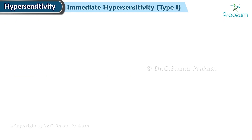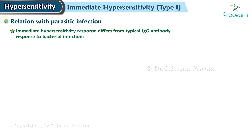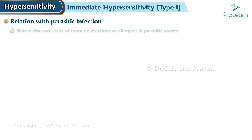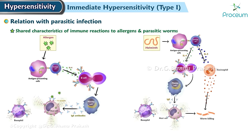The last thing we'll talk about with immediate hypersensitivity is its relationship with parasitic infection. Although the immediate hypersensitivity response differs considerably from the typical immunoglobulin G antibody response to bacterial infections, it is strikingly similar to the immune response elicited by parasitic worms. Shared characteristics of the immune reactions to allergens and parasitic worms include the production of immunoglobulin E antibodies and increased basophil and eosinophil activity.